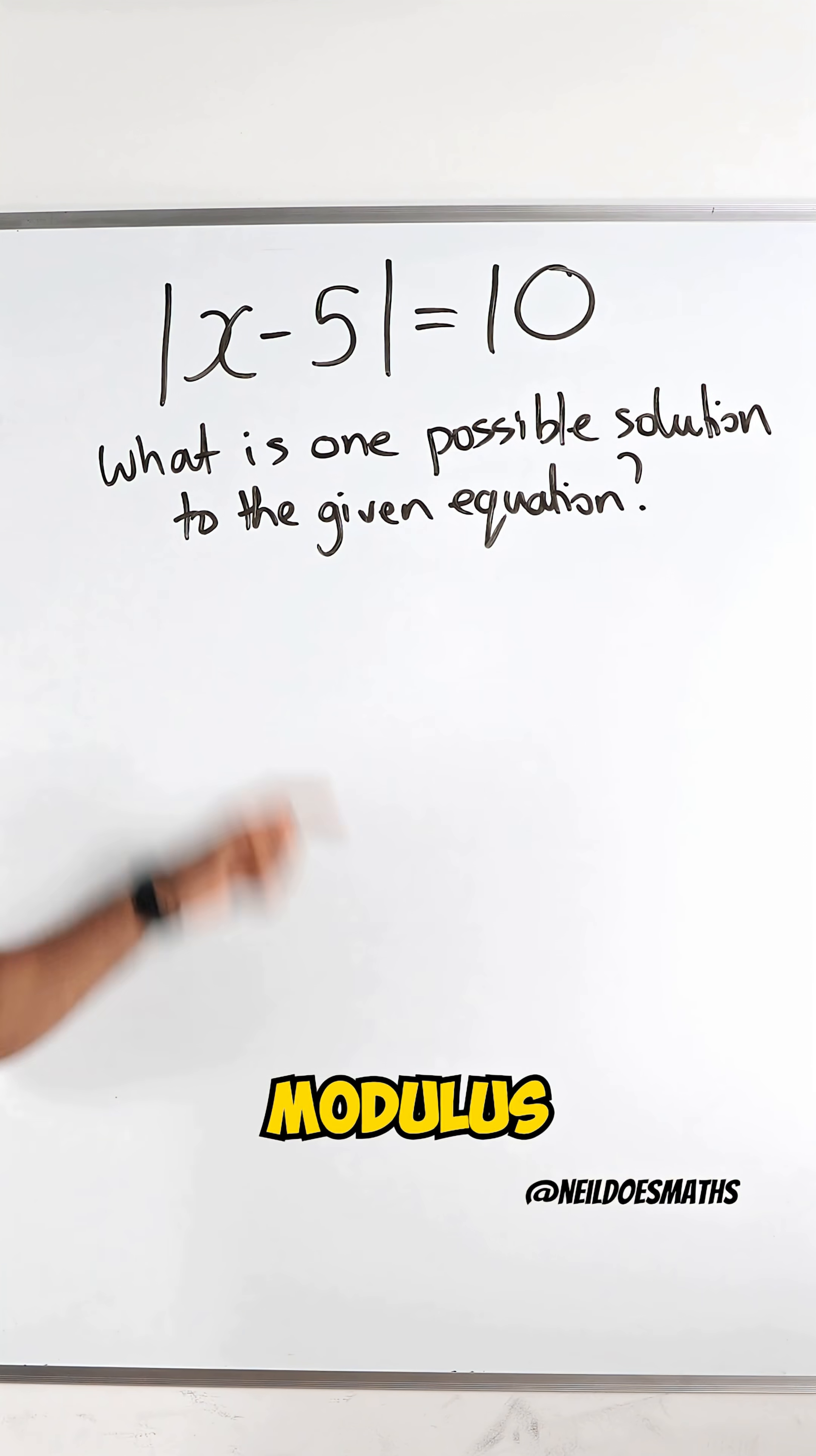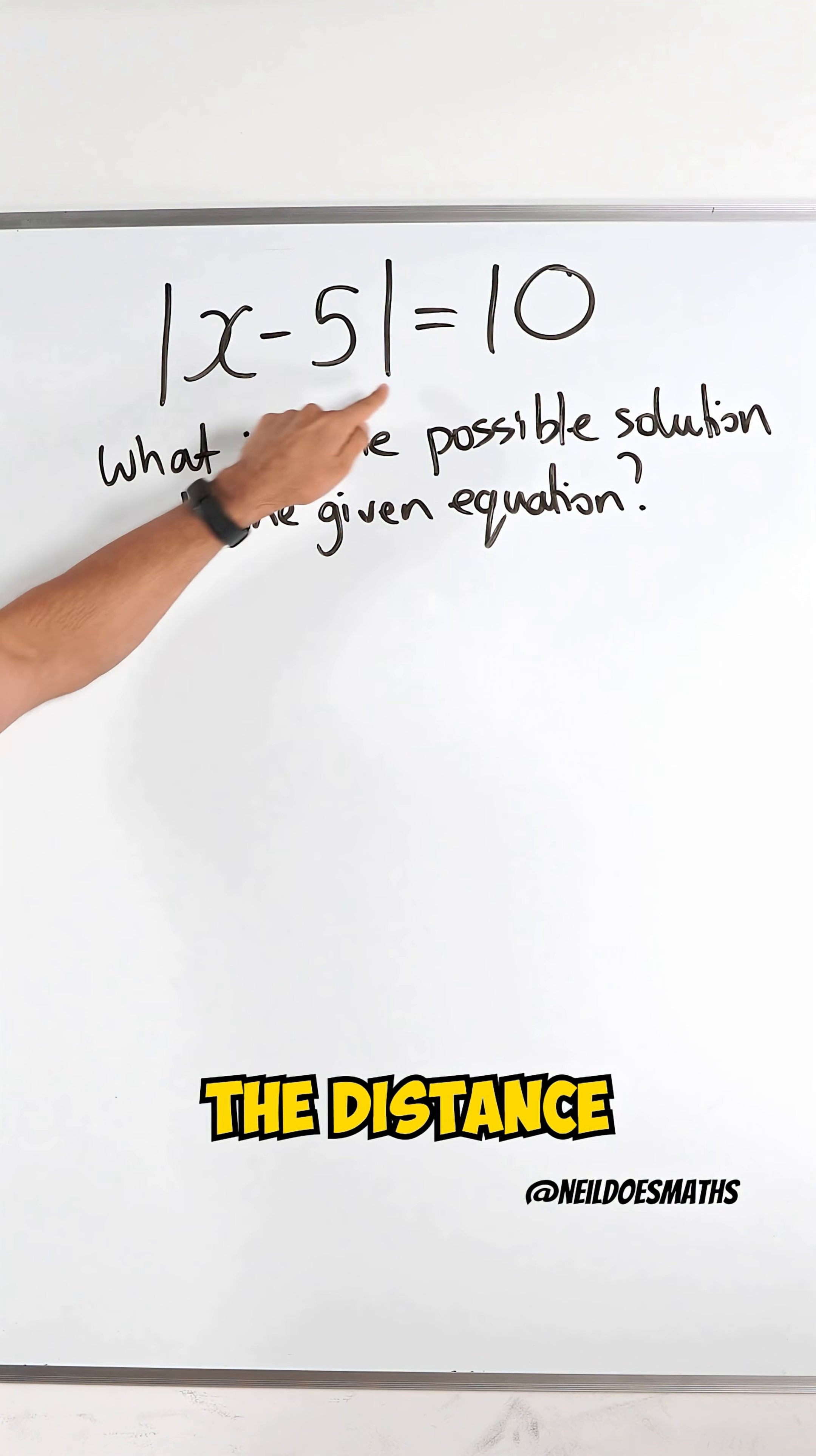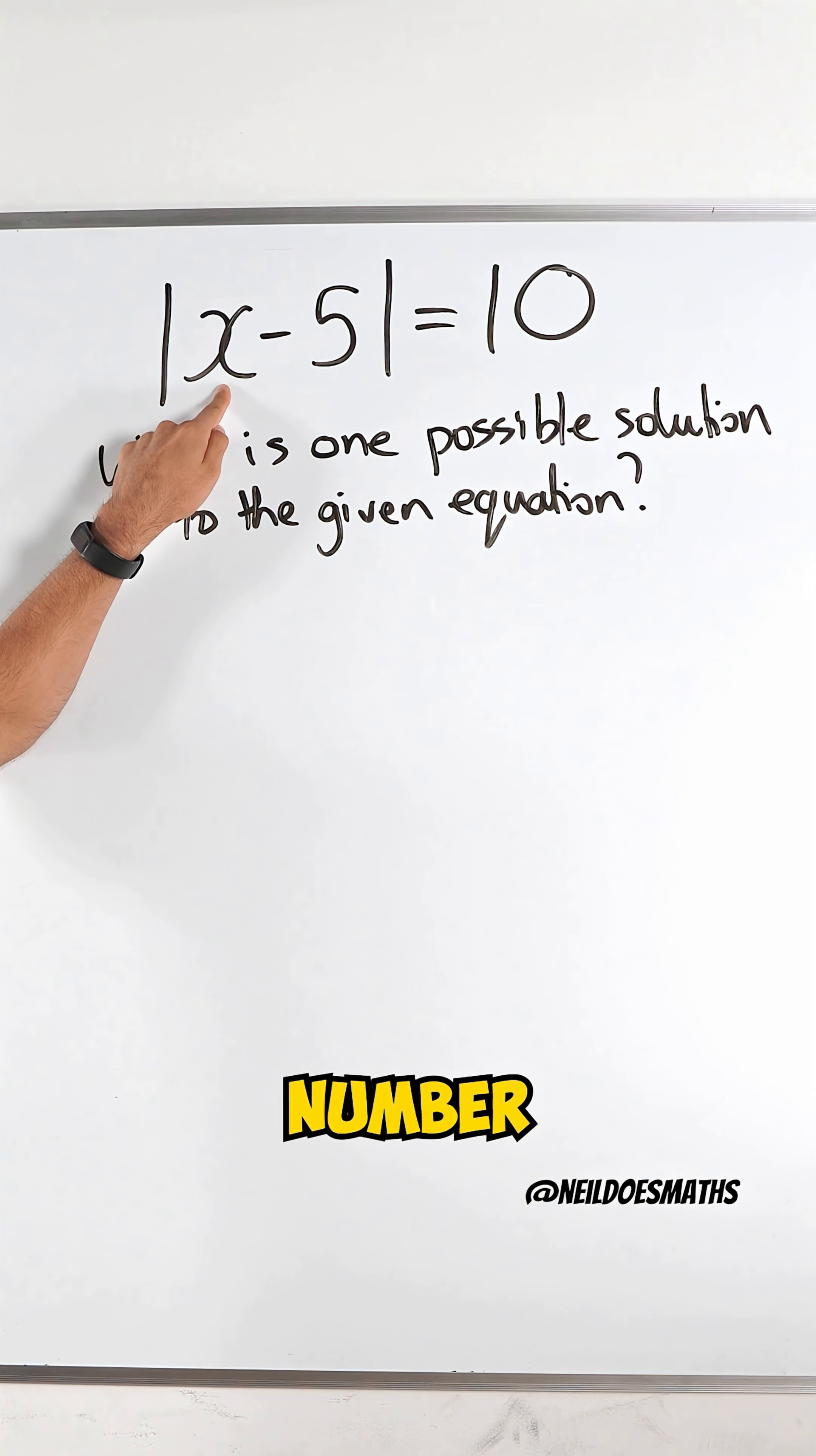Now what does that actually mean? Modulus just means distance. It's saying the distance between some number x and 5 has to be 10.